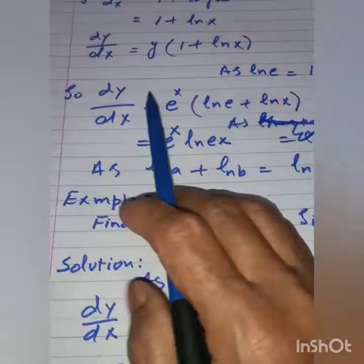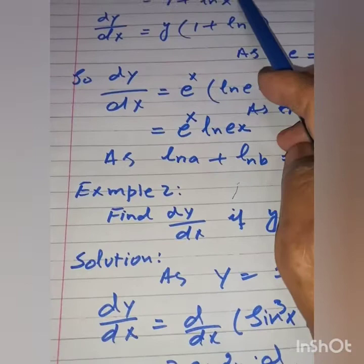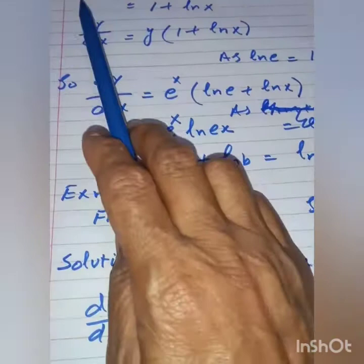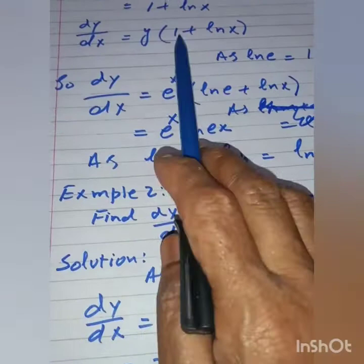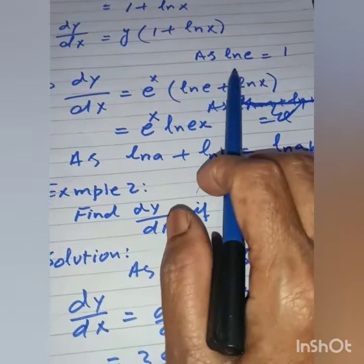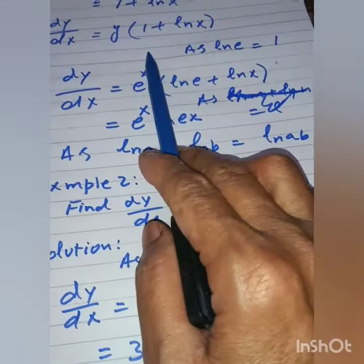Now, (1/y)·(dy/dx) = 1 + log(x). Multiplying both sides by y gives dy/dx = y·(1 + log x). Since ln(e) = 1, we can write 1 as log(e), so in place of 1 we write log(e).